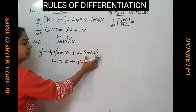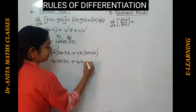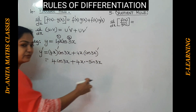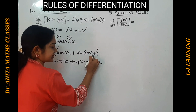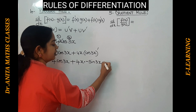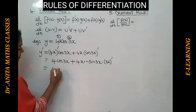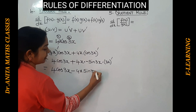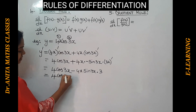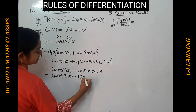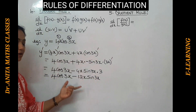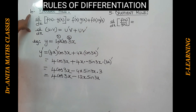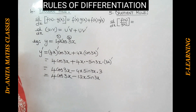Using the chain rule on cos 3x: derivative of cos is minus sine, giving minus sine(3x). But 3x is not just x, so we differentiate 3x to get 3. Therefore y′ = 4 cos 3x plus 4x times minus sine(3x) times 3, which simplifies to 4 cos 3x minus 12x sin 3x. So here we use both the product rule and the chain rule together.